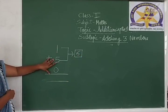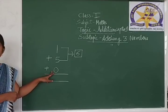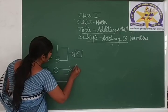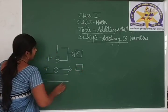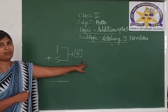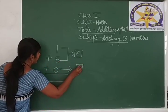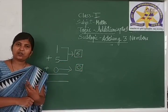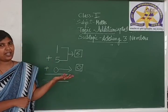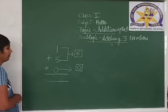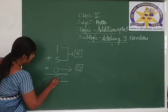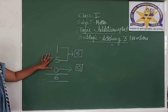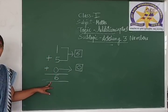Now we added these 2 numbers, 1 and 5. The remaining number is 0. Take 0 in the box below the 6. Now we have the sum of 2 numbers, 6, and the other number 0. We are going to add these 2 numbers: 6 and 0. When we add 0 to any number, the answer is the same number itself. So 6 plus 0 equals 6. The sum of 1 plus 5 plus 0 equals 6.